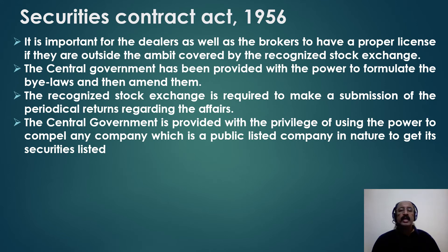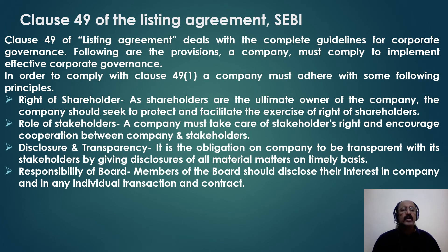The Securities Contract Act of 1956 says that dealers as well as brokers should have a license, without which they cannot operate as a stock market trader. There are bylaws enacted by the central government regarding periodical returns of trading, as well as provisions to compel any public listed company to get its securities listed. SEBI also has Clause 49, which covers the rights of shareholders, the role of stakeholders, disclosures, transparency, and the responsibilities of the board.